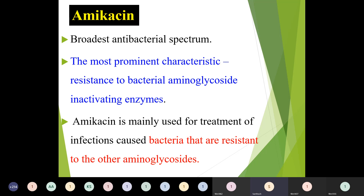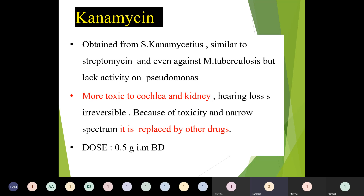Next is kanamycin, obtained from Streptomyces kanamyceticus. It is similar to streptomycin and active against Mycobacterium tuberculosis, but lacks activity against Pseudomonas. It is more toxic to the cochlea and kidney — hearing loss is irreversible. Because of its toxicity and narrow spectrum it has been replaced by other drugs. Though kanamycin is active against M. tuberculosis, only streptomycin is used due to adverse effects. Dose: 0.5 gram intramuscularly twice daily.